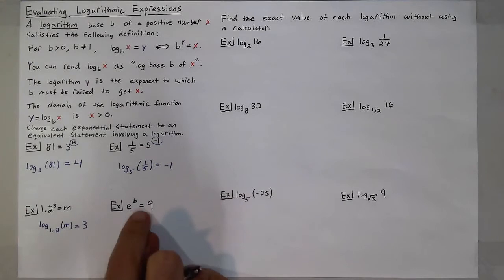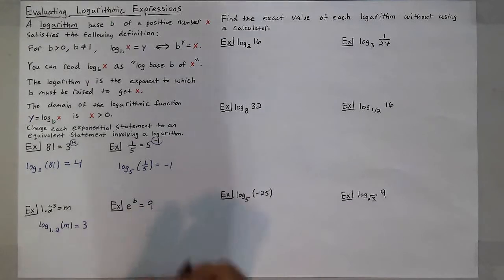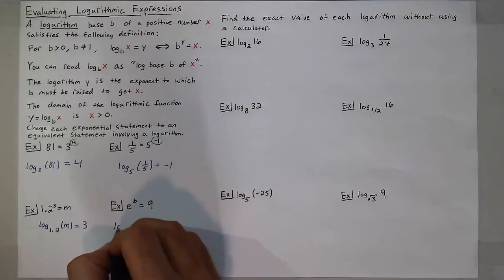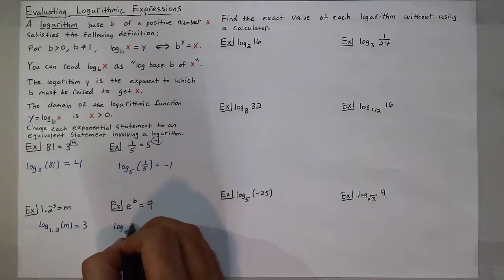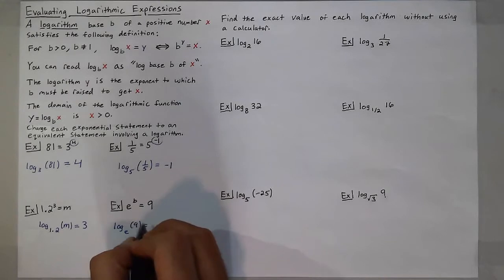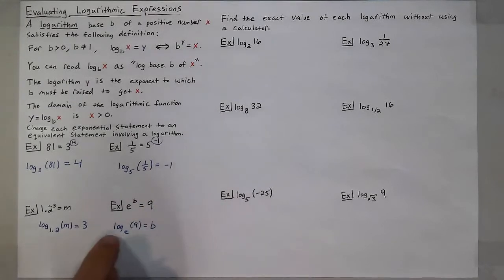For e to the b is equal to 9, we just learned that e is a decimal approximation. This can be rewritten as log base e of 9 is equal to b, where again, the log is equal to the exponent.